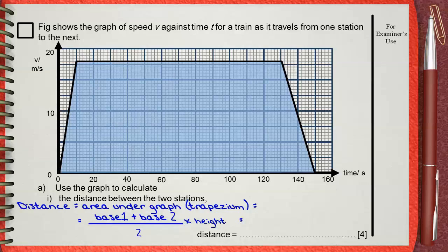Base 1 is 150, this base on the time axis. Base 2 is 120, which is the upper one. 150 plus 120 divided by 2 times the height, which is 18. This shows that the distance will be 2430 meters.